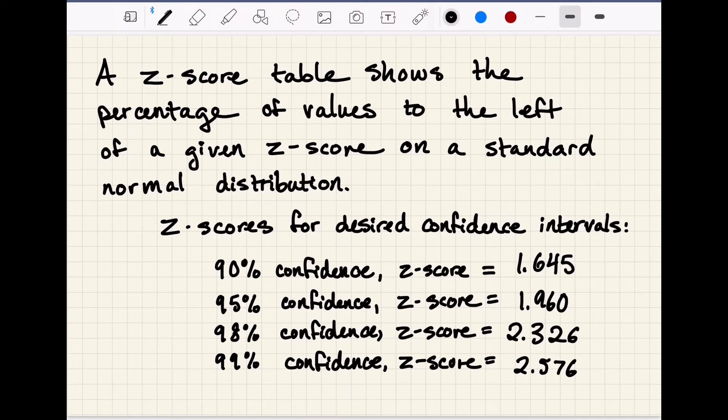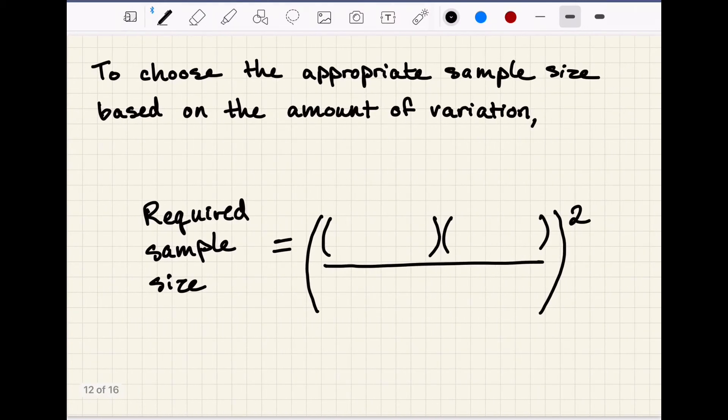Now we know our desired z-score based on how confident we want to be. So what do we do with it? We use it to find our sample size, which was the point all along.